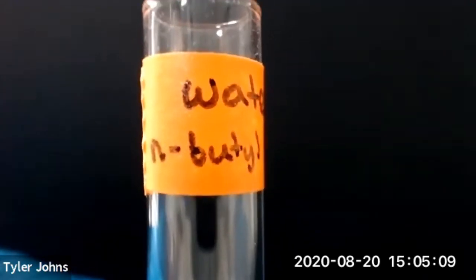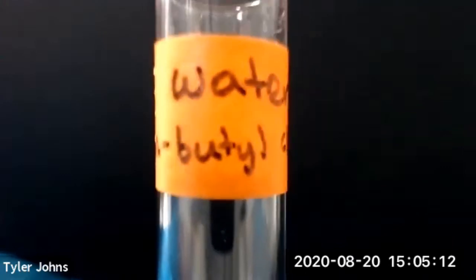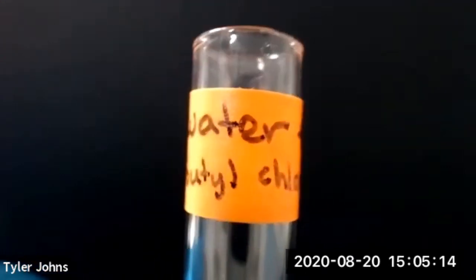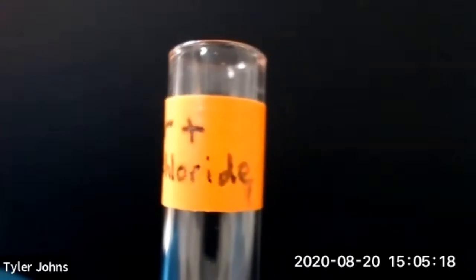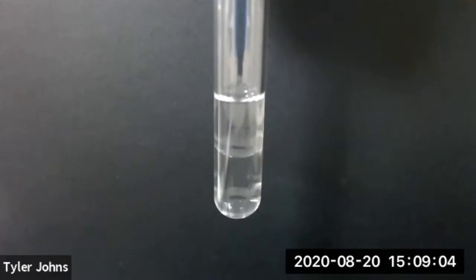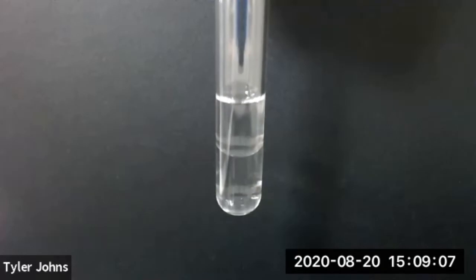The first pair of liquids contains water and n-butyl chloride. We'll now add several drops of water to our test tube containing water and n-butyl chloride.